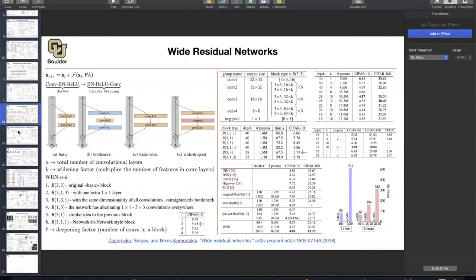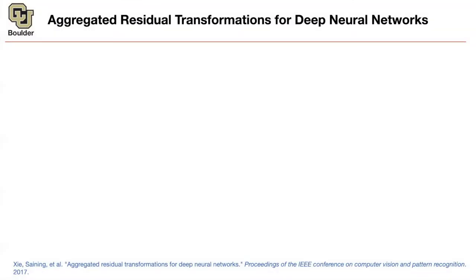And the next contribution in the literature over ResNets is what is called ResNeXt. This term you're gonna hear a lot. And that's basically this paper. It says aggregated residual transformation for deep neural networks. Let's see what the idea is.